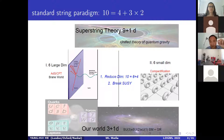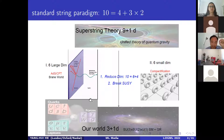String theory, which came out of the 1970s, remains to this day the best candidate that unifies general relativity with quantum field theory. Quantum field theory describes the standard model of physics and the microscopic world, while general relativity describes the evolution of galaxies and the cosmos on the macroscopic scale. The only problem is that the theory is consistent in ten dimensions, and we don't live in ten dimensions.